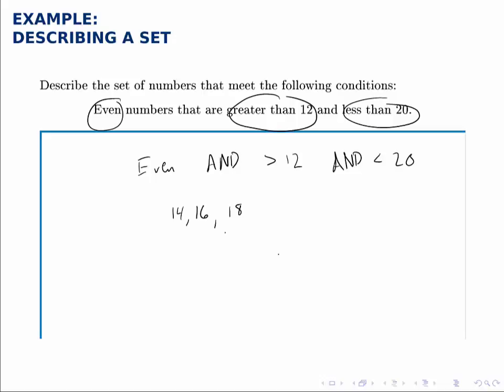And then we stop because the next number would be 20, which isn't less than 20. So notice the logical operator AND being used. In this case, we end up with just a list of three numbers.